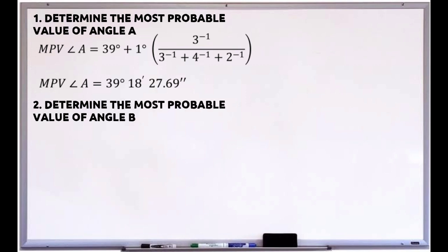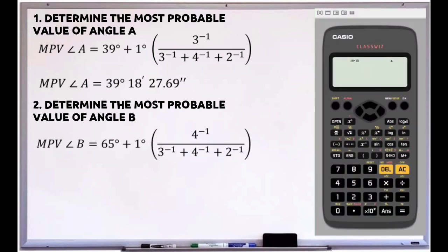The second question is: determine the most probable value of angle B. The most probable value of angle B equals 65 degrees 13 minutes 50.77 seconds.